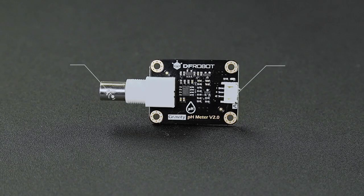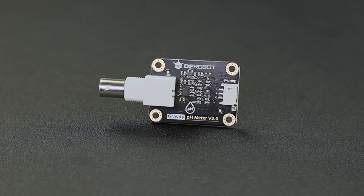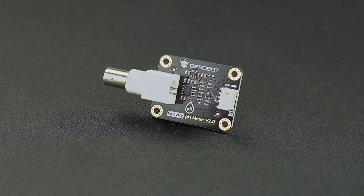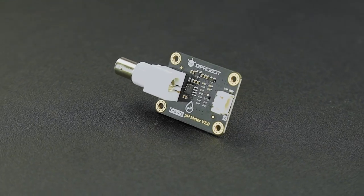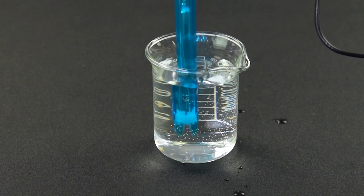The equipped signal adapter comes with BNC and gravity interfaces, plug-and-play, no soldering required. Besides, the sensor output is filtered by hardware and has a low overall jitter. With the pH sensor, you can easily detect the pH of a solution.